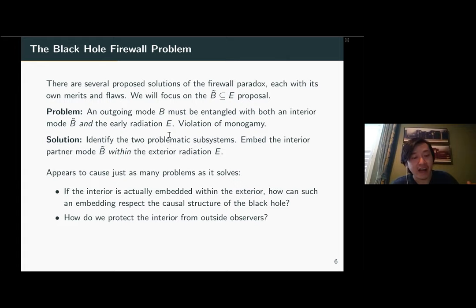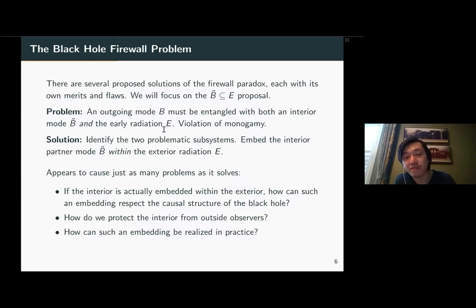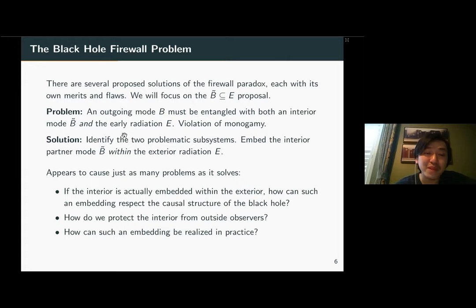Specifically: if the interior is actually embedded within the exterior, what does that mean for the causal structure of the black hole spacetime? How can you preserve locality with such a fundamentally non-local embedding? Relatedly, how do you protect the interior degrees of freedom from outside observers? Is it possible for an observer far from the black hole to interact with the early radiation and, because the interior is embedded in the exterior radiation, signal into the interior — which is space-like separated — causing causality violations? Despite sounding crazy, there's a ton of recent evidence from holography and AdS/CFT suggesting something akin to this proposal is what actually happens. Here we want to look at it in purely information-theoretic terms.